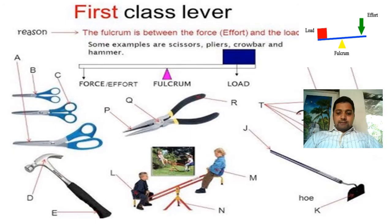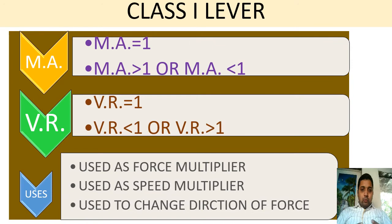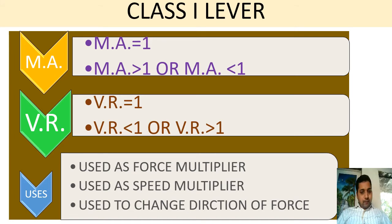To summarize Class 1 levers: MA can equal one, be greater than one, or less than one. VR can also be equal to one, less than one, or greater than one. This type can be used as a force multiplier, a speed multiplier, or simply to change the direction of force applied — all purposes of a machine can be satisfied.